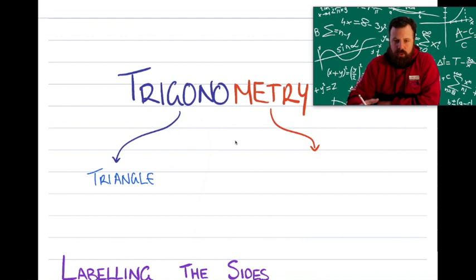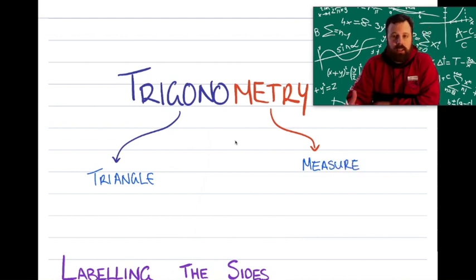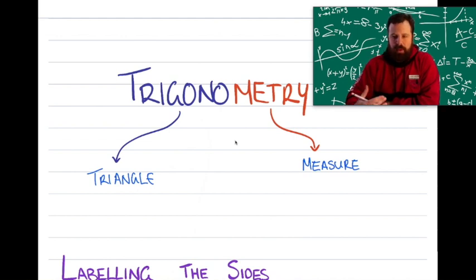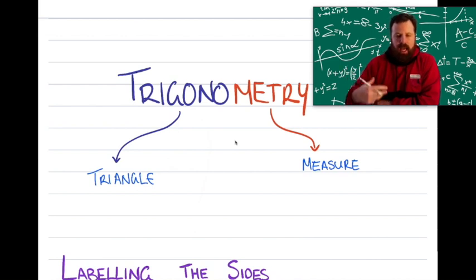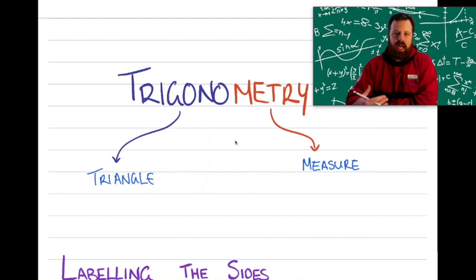And the metric part — the trigonometry part — just stands for the measure. So that last part of the word stands for measure. So trigonometry is just dealing with the measures of triangles and all the measurements — angles, sides, et cetera — that we deal with in triangles. You can see how the previous lessons where we've done Pythagoras's theorem kind of ties in there. Pythagoras's theorem was the start and the lead into this idea of trigonometry.